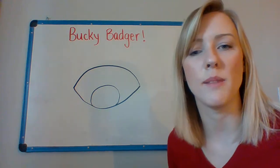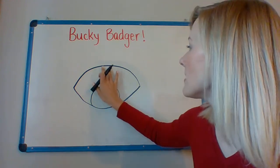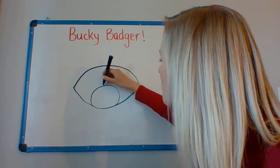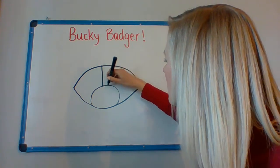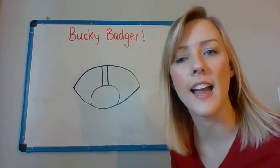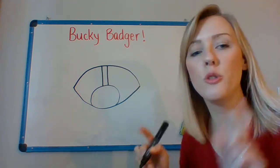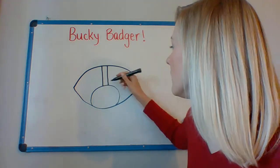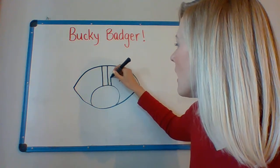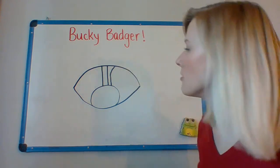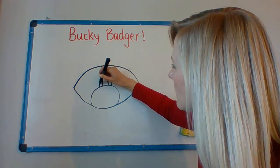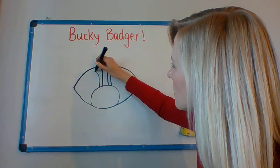Next we're going to add some stripes to his face. So I'm going to make some lines — straight lines that go up from the circle right in the middle. We've got two straight lines and then I'm going to add two curved lines on the outside of the straight lines. So I'm going to go up and then when I get about halfway I'm going to curve out on one side and then on the other side. Up and curve out.